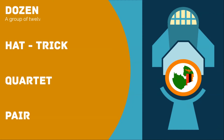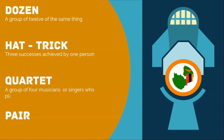For example, a dozen is a group of 12 of the same thing. A hattrick is just 3 successes achieved by one person. A quartet is a group of 4 musicians or singers who play or sing together, while a pair is just 2 things of the same type.